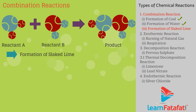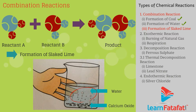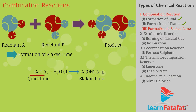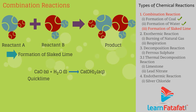Formation of slaked lime. Take a small amount of calcium oxide or quick lime in a beaker. Slowly add water to it. Calcium oxide reacts vigorously with water to produce slaked lime, and a large amount of heat is evolved. In this reaction, calcium oxide and water combine to form a single product, calcium hydroxide: CaO + H₂O → Ca(OH)₂.